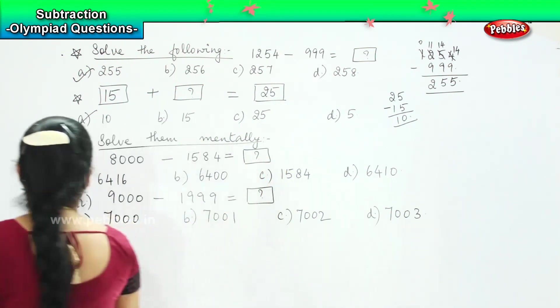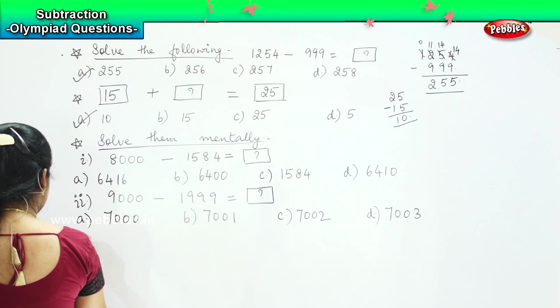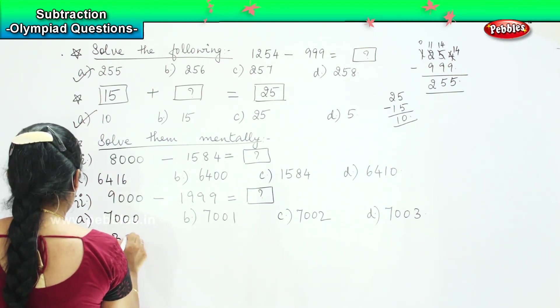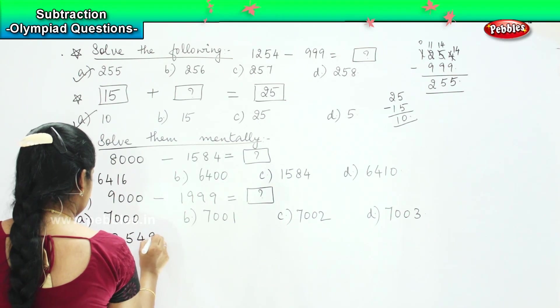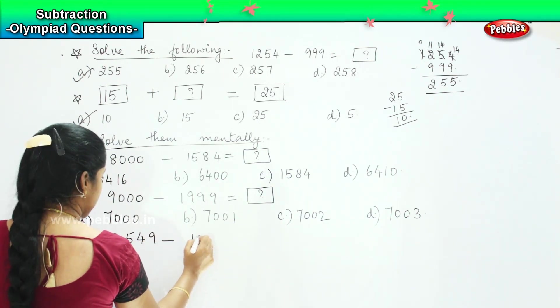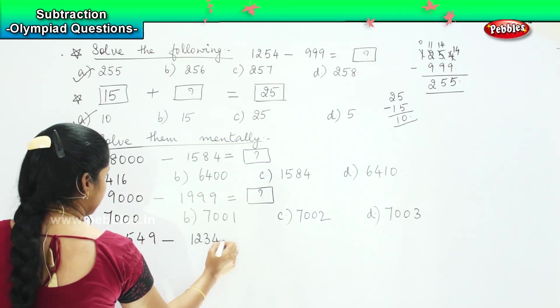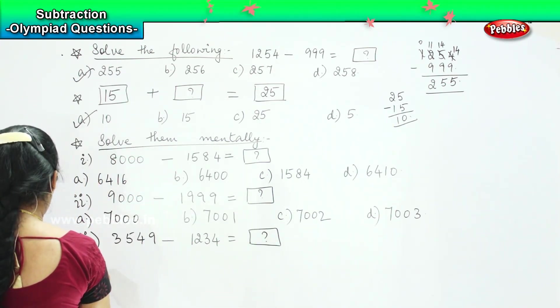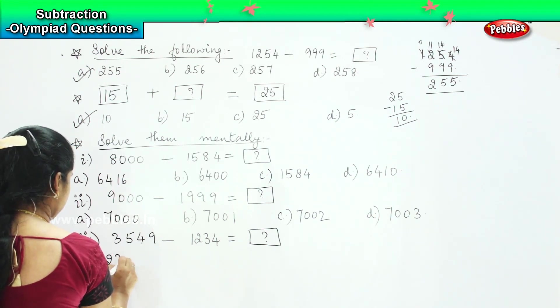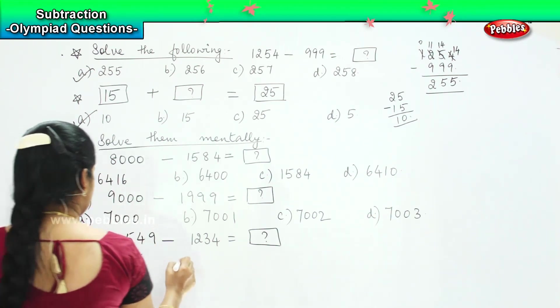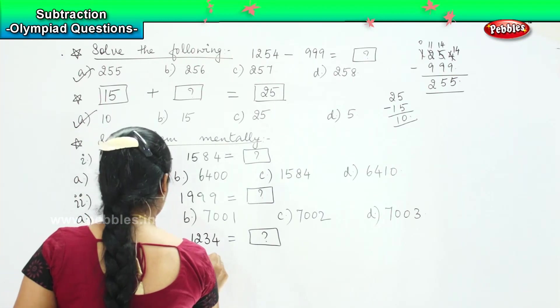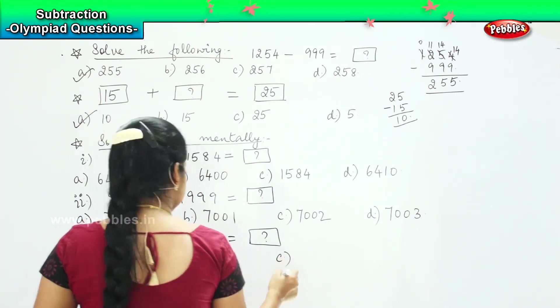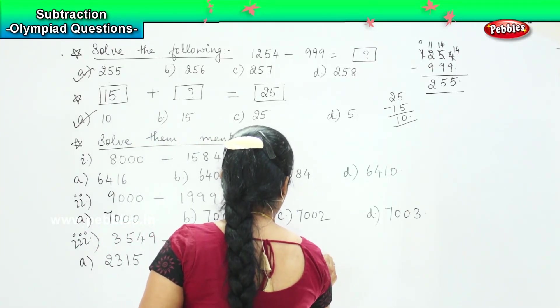And the third one is 3549 minus 1234 equals to something. Your options are 2315, option B 2316, option C 2317,